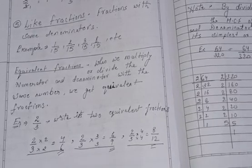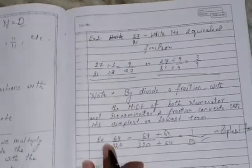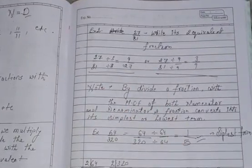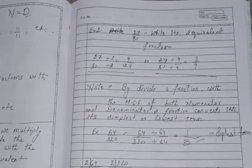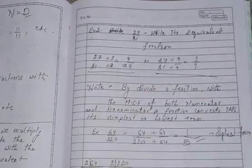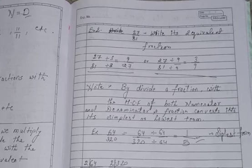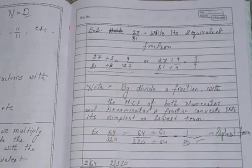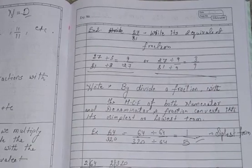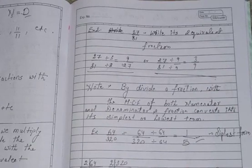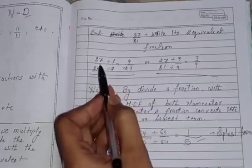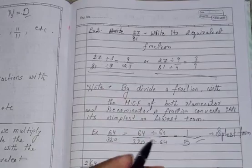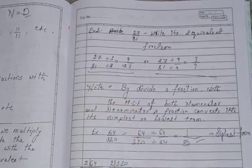Now, let's take example number second. The second example is like 27 by 81. Write its two equivalent fractions. So, what will I do? Either I can divide by 3 or 9 or by directly 27. It's your choice by which number you multiply. Now, for example, 27 by 81. If I divide the number by 3 because it comes in a table of 3 because it can be divisible by 3.